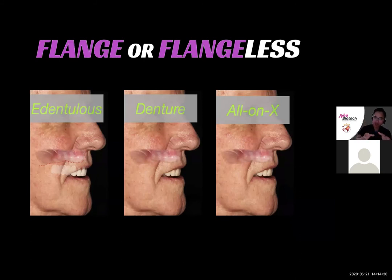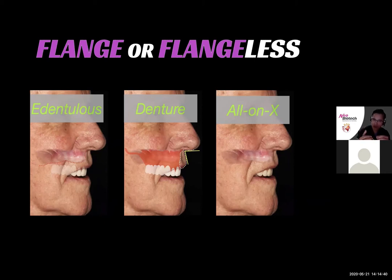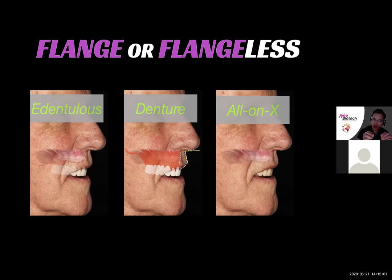Anatomically, the edentulous maxilla resorbs inward in the anterior and outward in the posterior. If a patient wears dentures, the buccal flange makes up for hard and soft tissue loss in the anterior maxilla and helps maintain upper lip support. For patients who already wear dentures, I typically take lateral photos with and without the dentures. If the lip is under-supported, I ask: is it because of the labial position of the denture teeth or because the buccal flange is under-contoured? If it's the flange, I add wax to it to see if I can improve the lip profile.